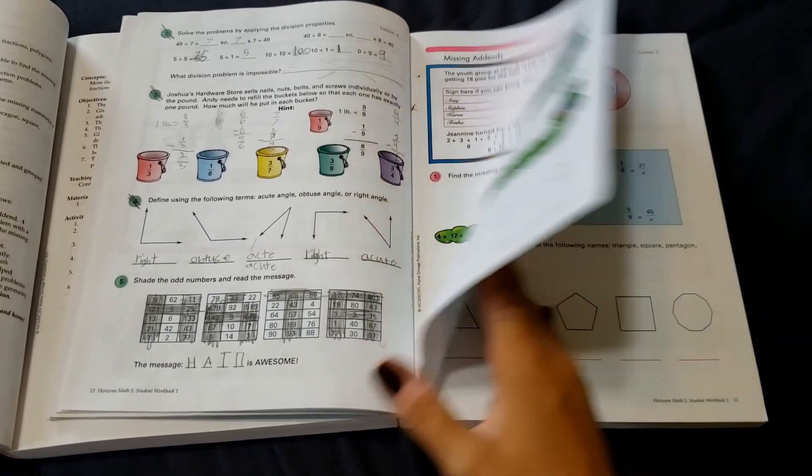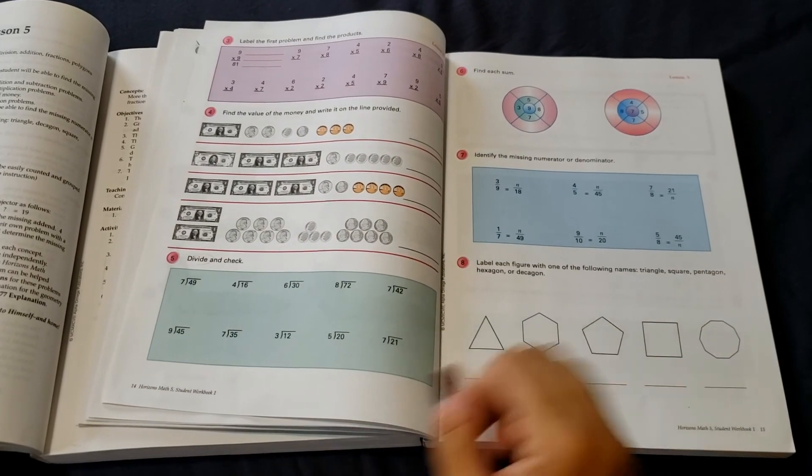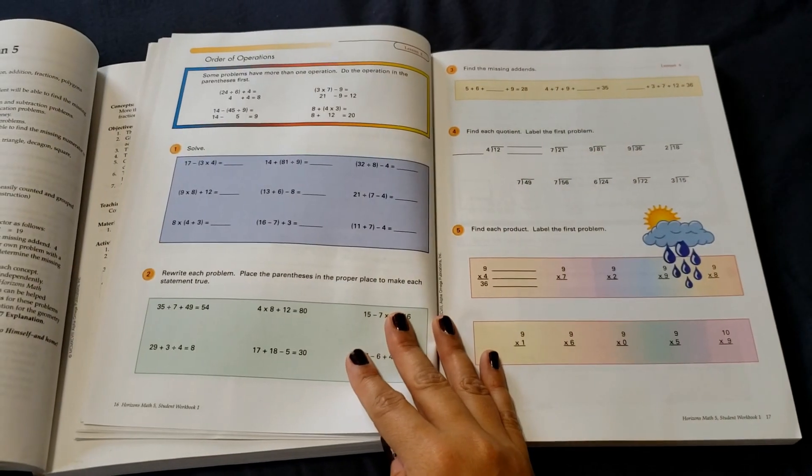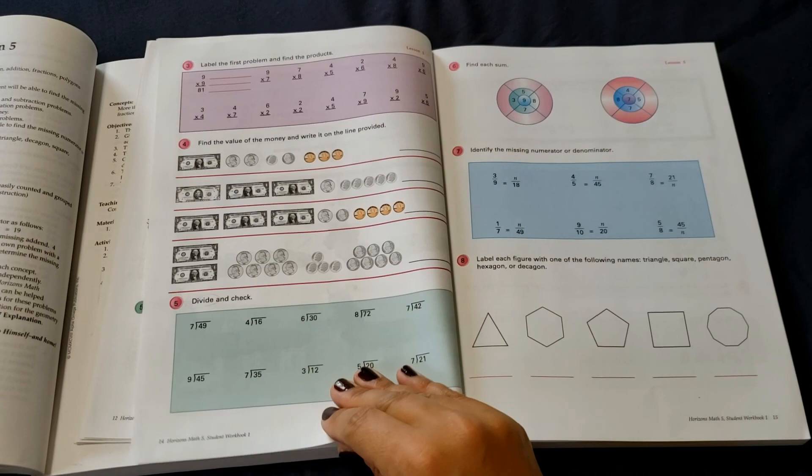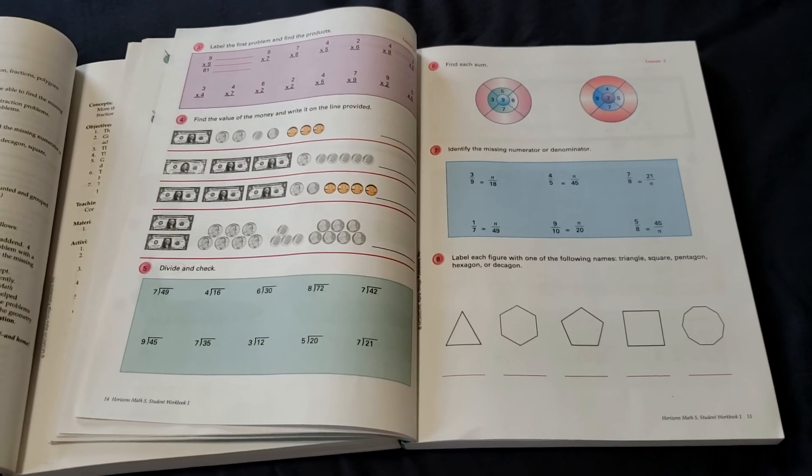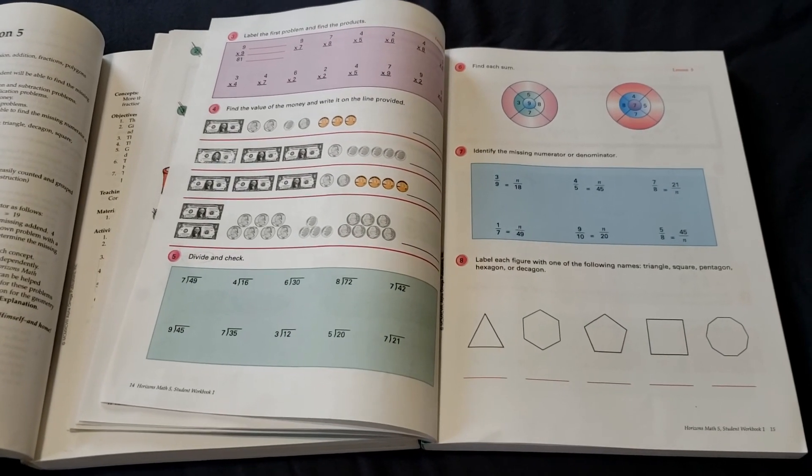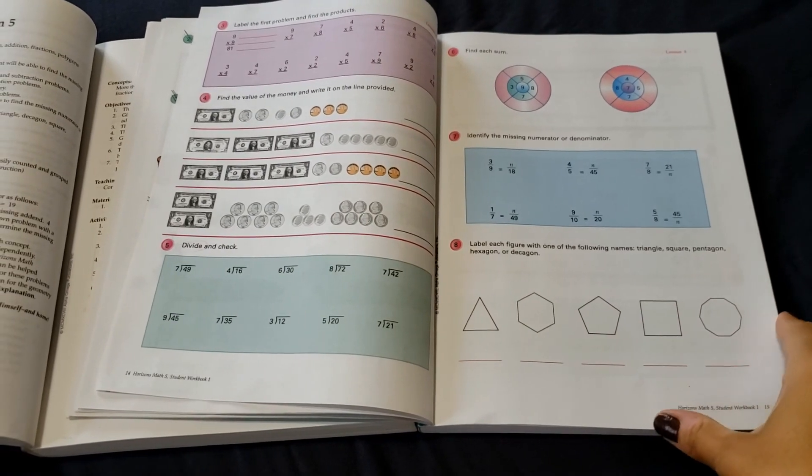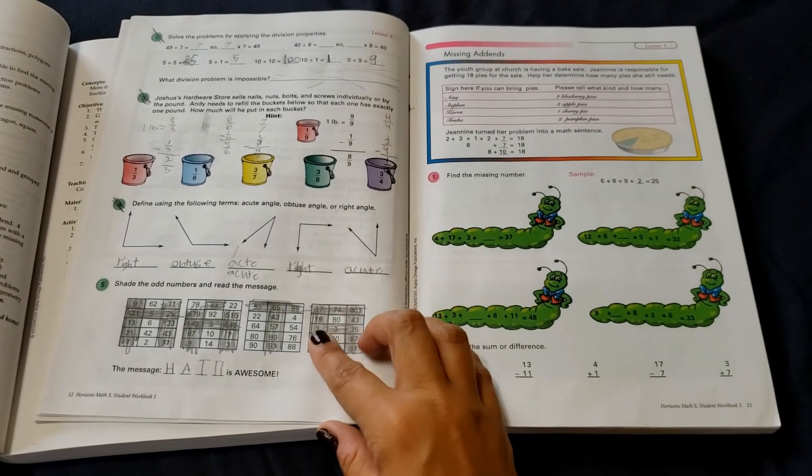He will work through each section. If he has a question, he'll come and ask me or needs, you know, a little jumpstart. We'll do that. Otherwise then when he's finished, I grade it. And if there's anything he missed where I could tell it was if it was a, you know, just a simple mistake going too fast, or if it was a, I don't quite understand the concept of the problem, you know, then we'll go back and we'll review that and work through them together. So.